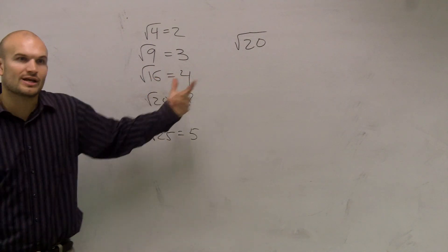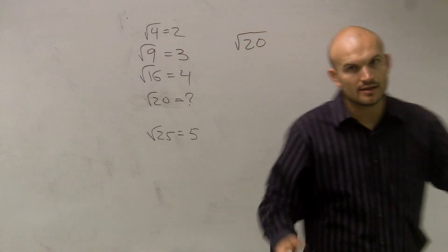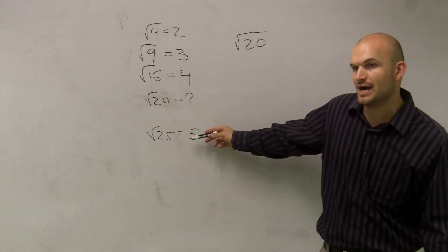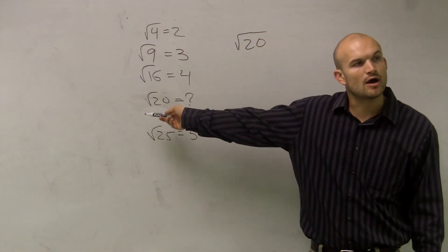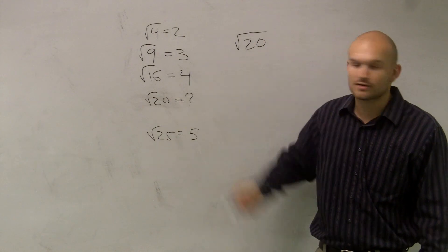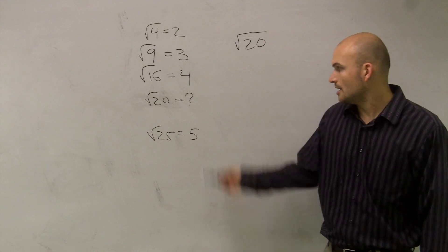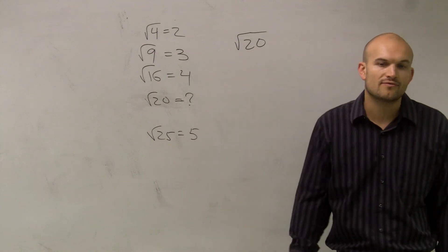So if you guys look at your integers, there's no integer, that means whole number, that's between 4 and 5, right? So I need to figure out what is the square root of 20. I know it's going to be somewhere between 4 and 5.